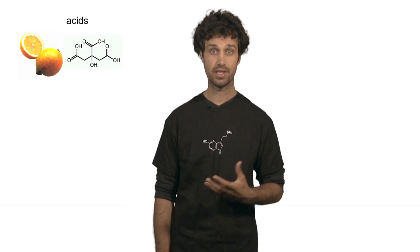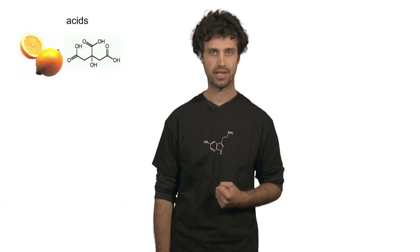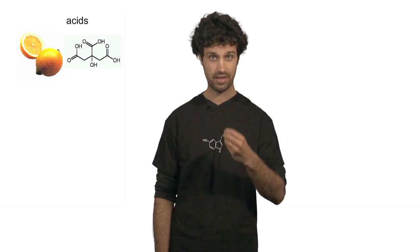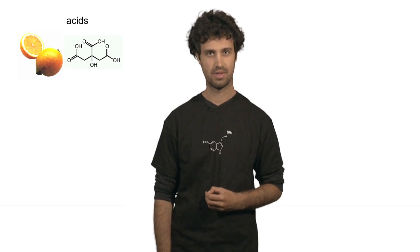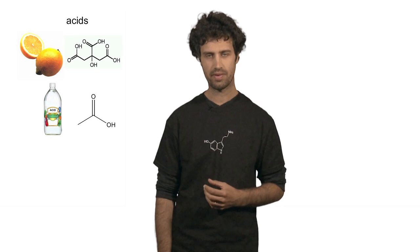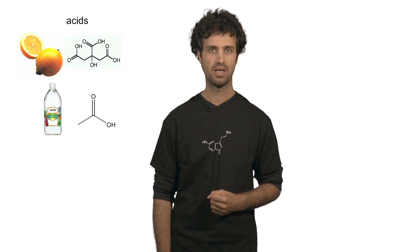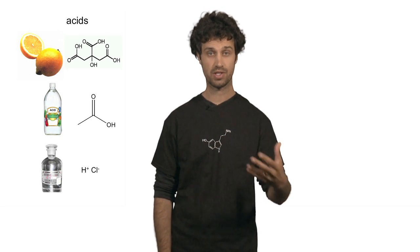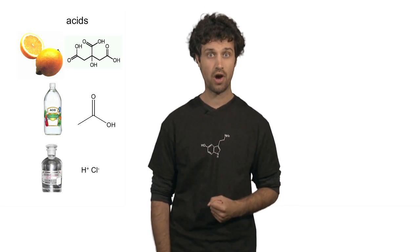In this segment we will talk about acids and bases and acid-base chemistry. Acids and bases are all around us. For instance, citric acid is the component that gives lemons their acidic flavor. Another example of an acid is acetic acid, which is the main component in vinegar, or hydrochloric acid, which is an example of a strong acid.